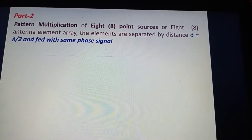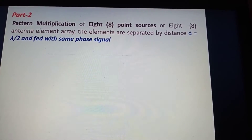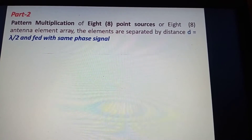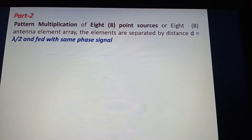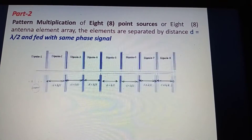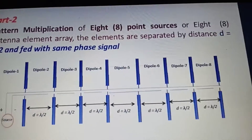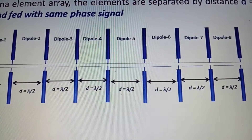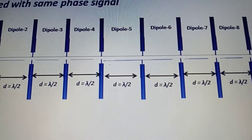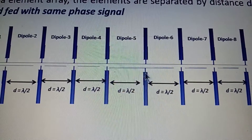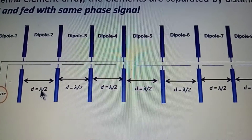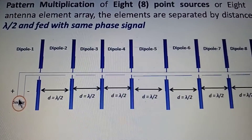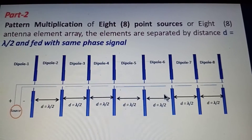This is the pattern multiplication of eight point sources — eight antenna array elements separated by lambda/2 and fed with the same phase signal. This is the structural representation: dipole one through dipole eight are arranged and separated by lambda/2 each, with the same phase source applied to all elements.